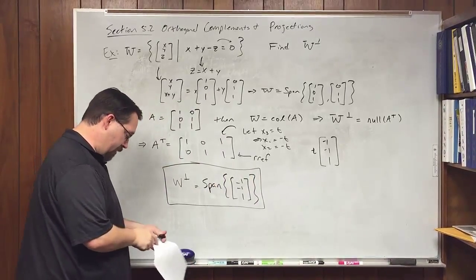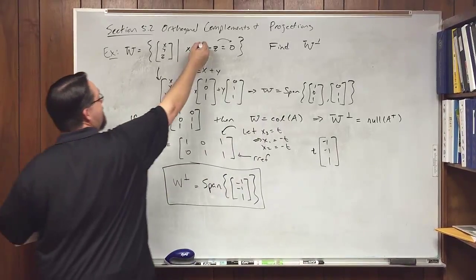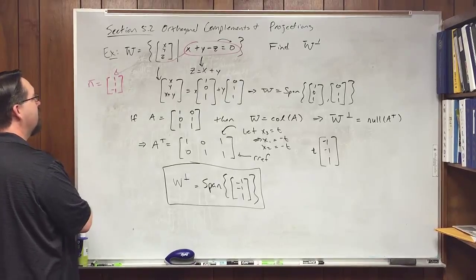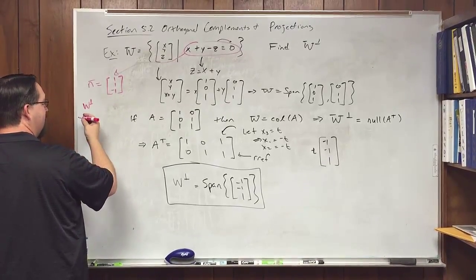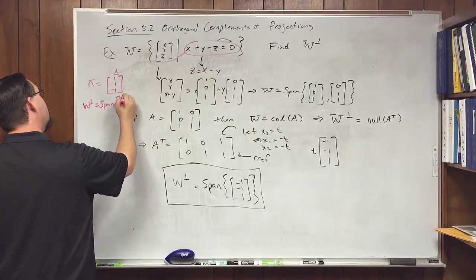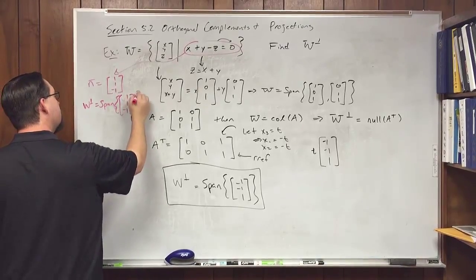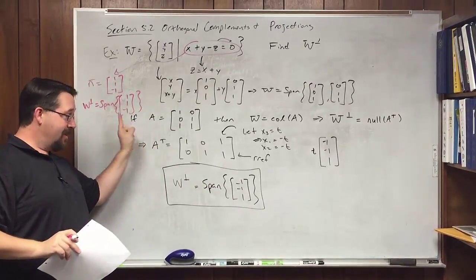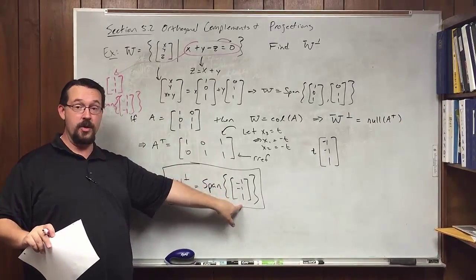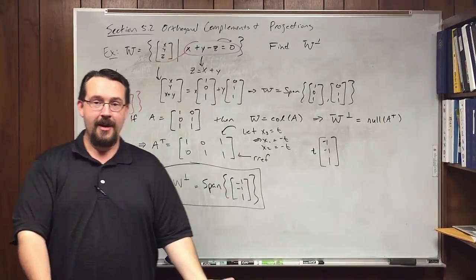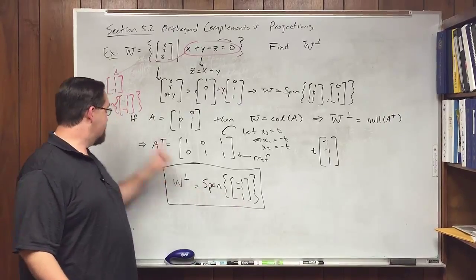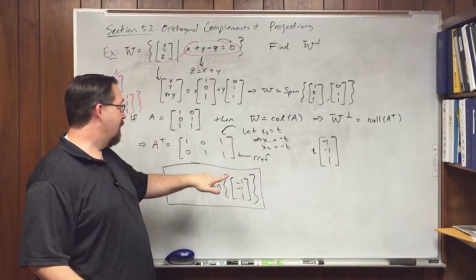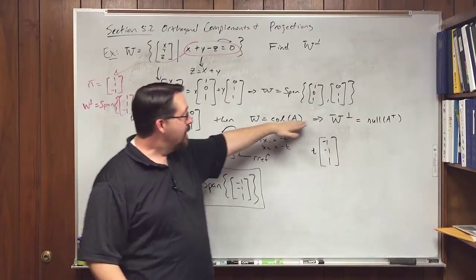Going back to the earlier point: the normal vector to the plane x+y−z=0 is (1,1,−1), so we could immediately see that W⊥ is the span of (1,1,−1). You might think that's not the same as (−1,−1,1), but it is — the span of this vector equals the span of that vector because they are parallel; one is just the negative of the other. This is the general approach: put basis vectors as columns of A, then find the null space of A transpose.